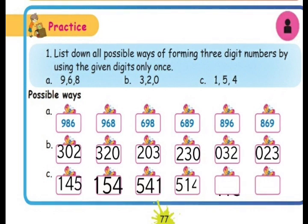Third practice question using the digits 1, 5, and 4. Keeping 1 as the first digit: 1 4 5 or 1 5 4. Keeping 5 as the first digit: 5 4 1 or 5 1 4. Keeping 4 as the first digit: 4 1 5 or 4 5 1.